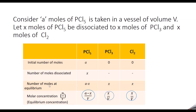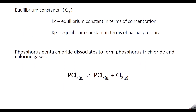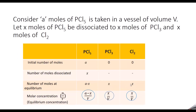At equilibrium, to find the number of moles: the initial moles are A, and X moles dissociated, so what is left at equilibrium will be A minus X. So A minus X moles of PCl5 is left. Then X moles of PCl3 and X moles of Cl2, since the stoichiometric coefficients of PCl3 and Cl2 are both 1, we write X and X.